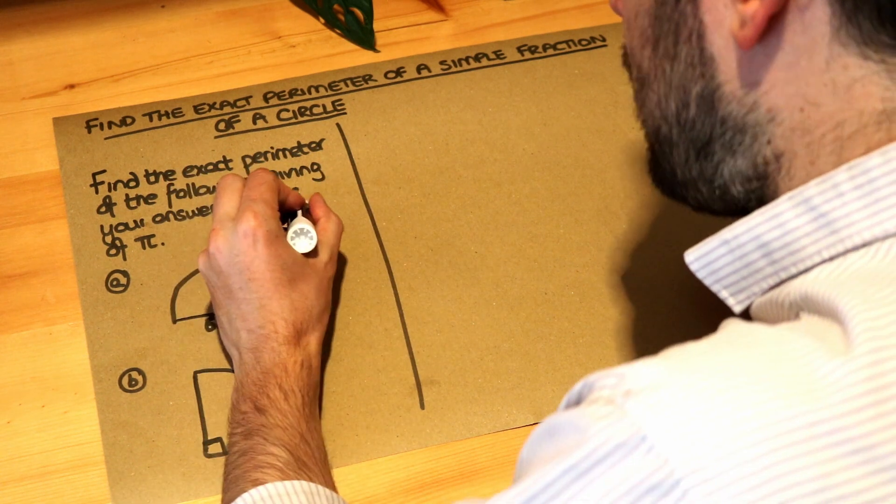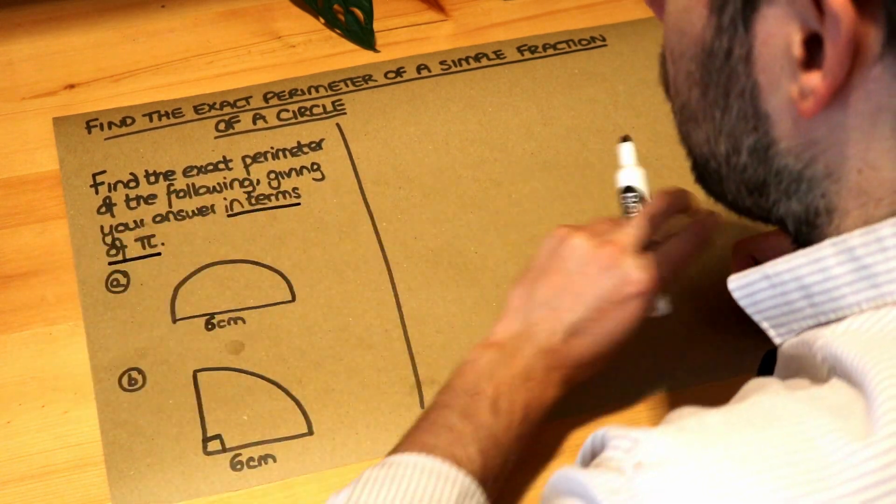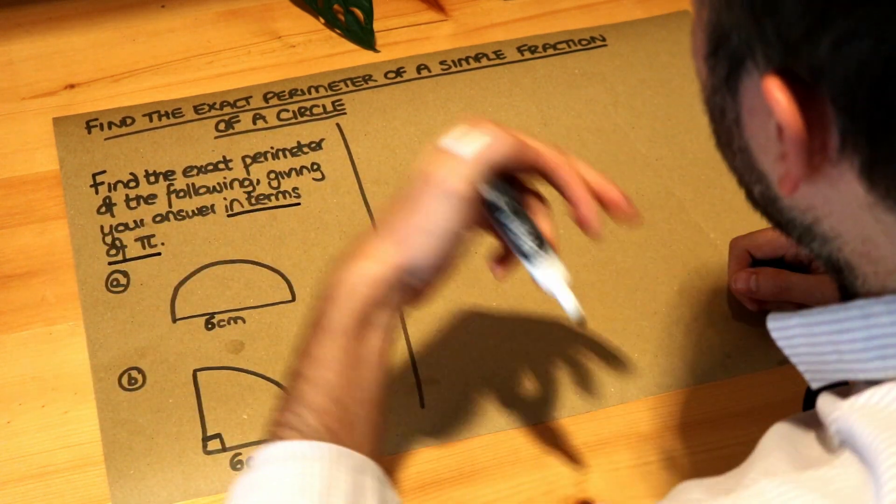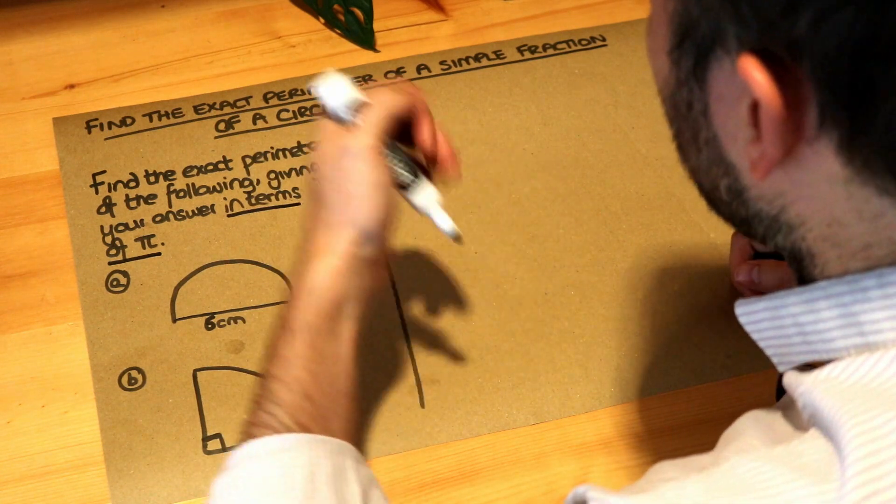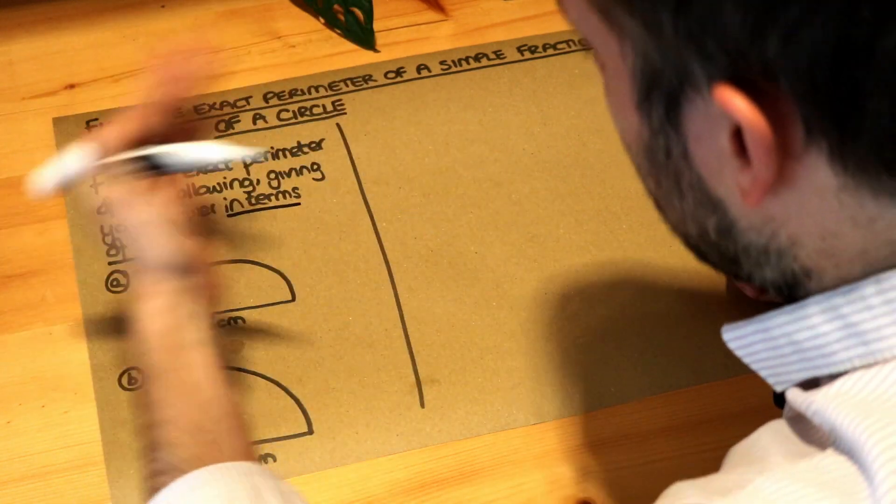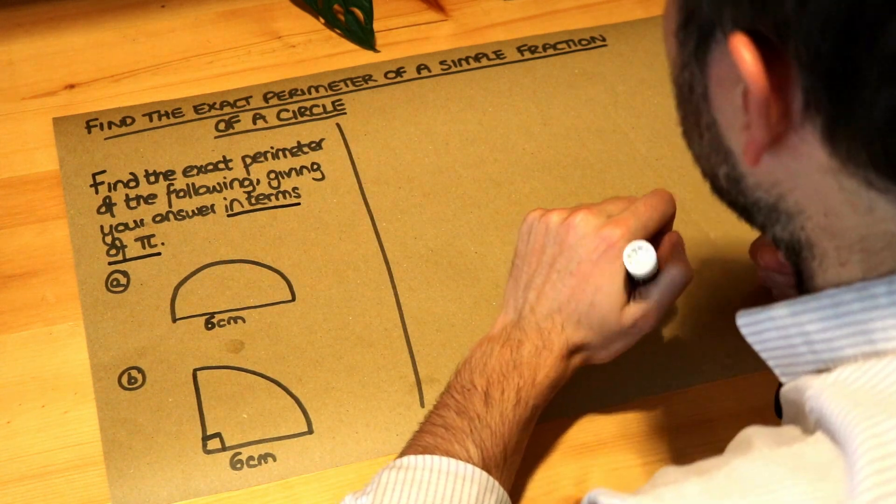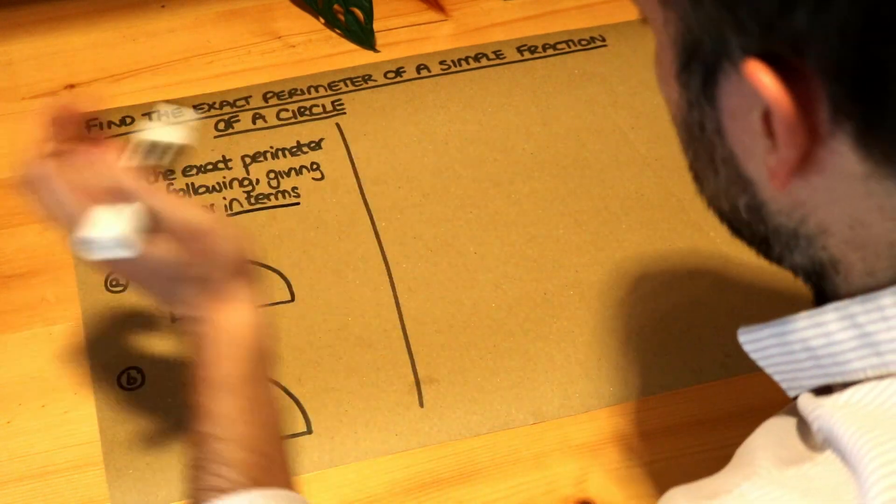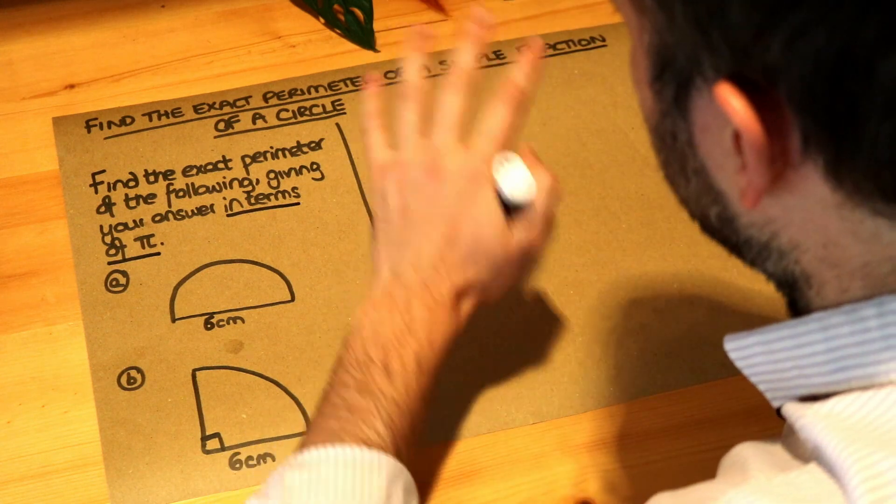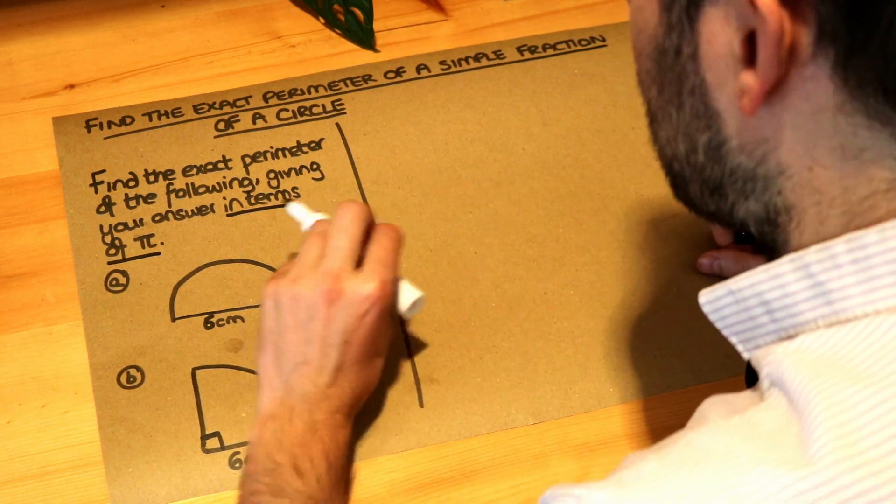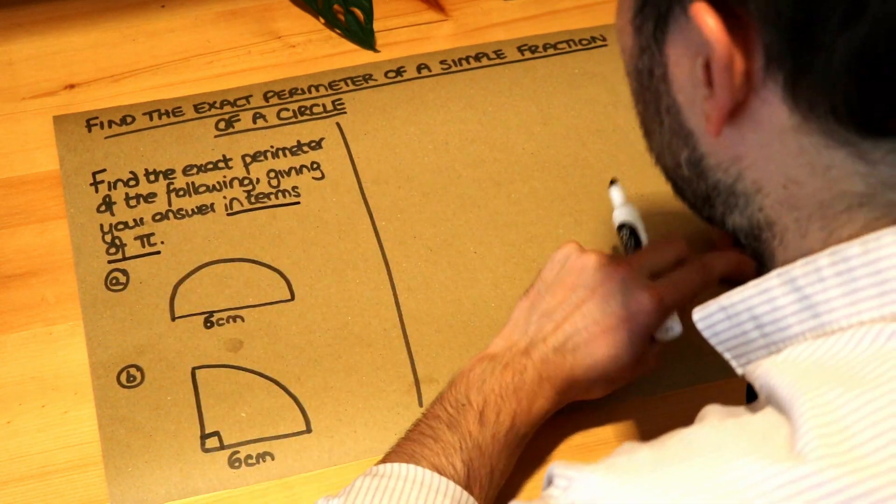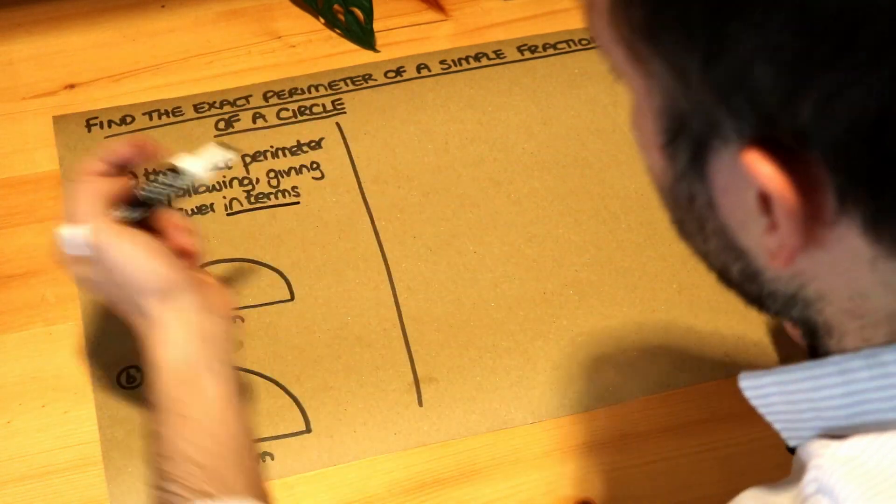Now when we give an answer in terms of pi, we saw in previous videos it just means that you keep the pi in the answer. So it might be 10 pi, which means 10 lots of pi, rather than giving your answer as a decimal. So you wouldn't want to give your answer as something like 35.67 with decimals in it. We want to give it as an answer that has a pi in the answer, like 10 pi, 3 pi, 2 pi.